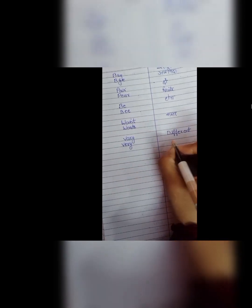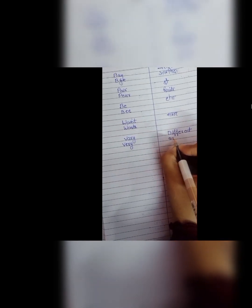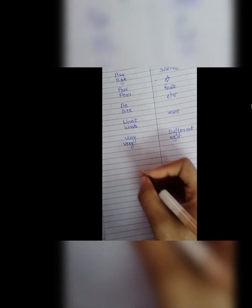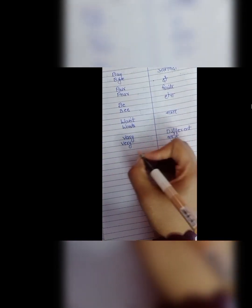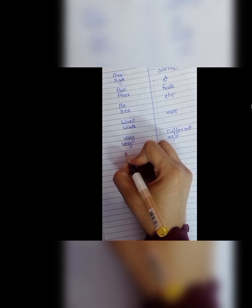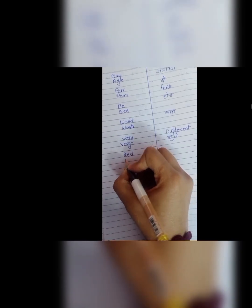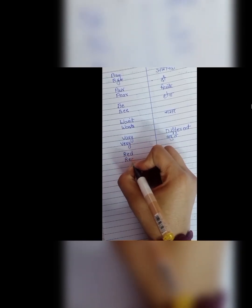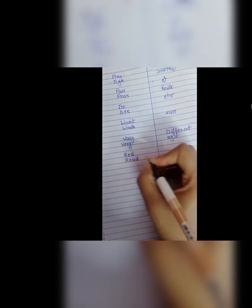Next is vary and very. V, A, R, Y, vary means different. I have vary kind of clothes. And V, E, R, Y means bahut. Jaise I have very clothes. So vary and very.